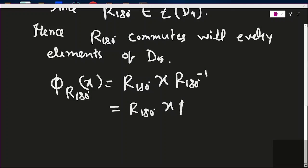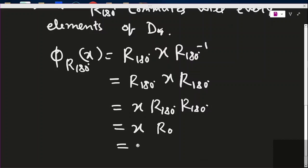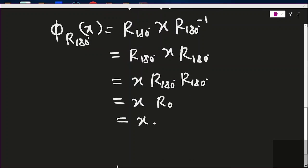So phi_{r180°}(x) = r180° · x · (r180°)⁻¹ = r180° · x · r180°. Since r180° commutes with every element of D4, this equals x · r180° · r180° = x · e = x. That means every element maps to itself — phi_{r180°} is the identity automorphism.